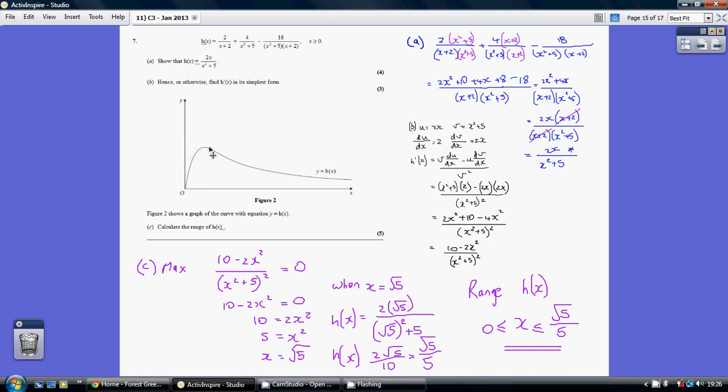Our spread is going to be the y value of the maximum point. So we need to work out the coordinate of the maximum point. At the maximum point, dy dx equals 0. So we're going to solve this equaling 0. It's the numerator which is going to be 0, so we need 10 minus 2x squared equaling 0.